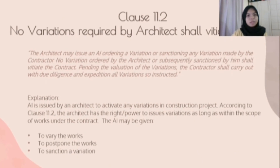Next, Clause 11.2 - No variation required by the architect should void the contract. An AI is issued by an architect to activate any variation in a construction project. The architect has the right and power to issue a variation as long as it is within the scope of work under the contract. The AI may be given to vary the works, to postpone the works, or to sanction a variation.